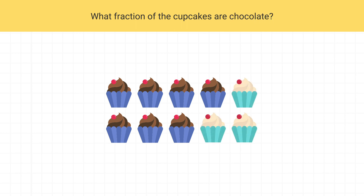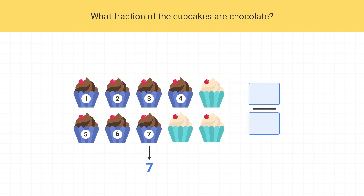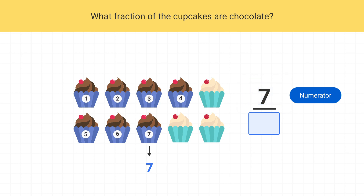How many chocolate cupcakes are there? There are one, two, three, four, five, six, seven chocolate cupcakes. Where should this number seven go? The number of chocolate cupcakes is the numerator of the fraction, so seven goes on top of the fraction.